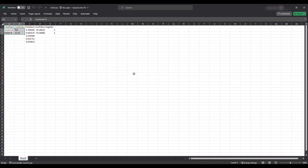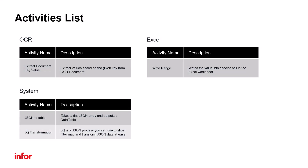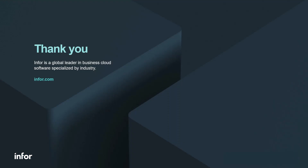Now that the flow has been built and successfully executed, you can publish the flow to RPA management in the InforOS multi-tenant environment. To do so, please follow our different tutorial on how to publish an RPA flow into RPA management. During today's tutorial, we demonstrated how to use multiple automation activities in Infor RPA Studio, such as ExtractDocumentKeyValue, JQTransformation, JSONToTable, and WriteRange. I hope you enjoyed watching this tutorial. Visit our YouTube channel where you can find more content. Thank you!